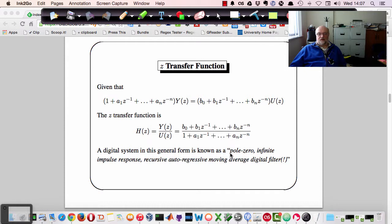So this type of system is known as a pole zero because it's got poles and zeros. Infinite impulse response because it's essentially got a denominator. Recursive autoregressive moving average digital filter.